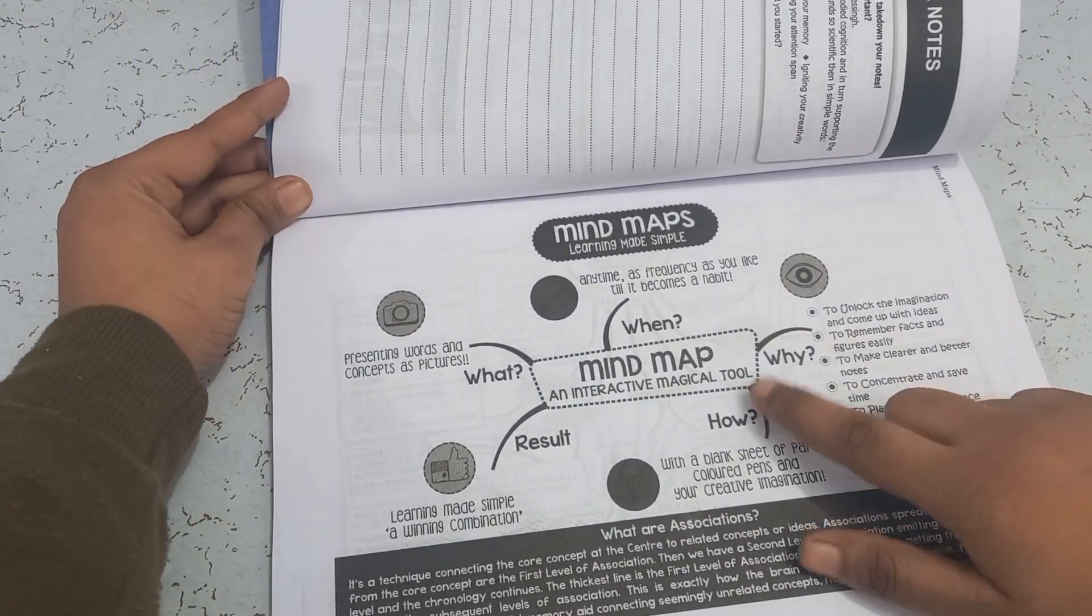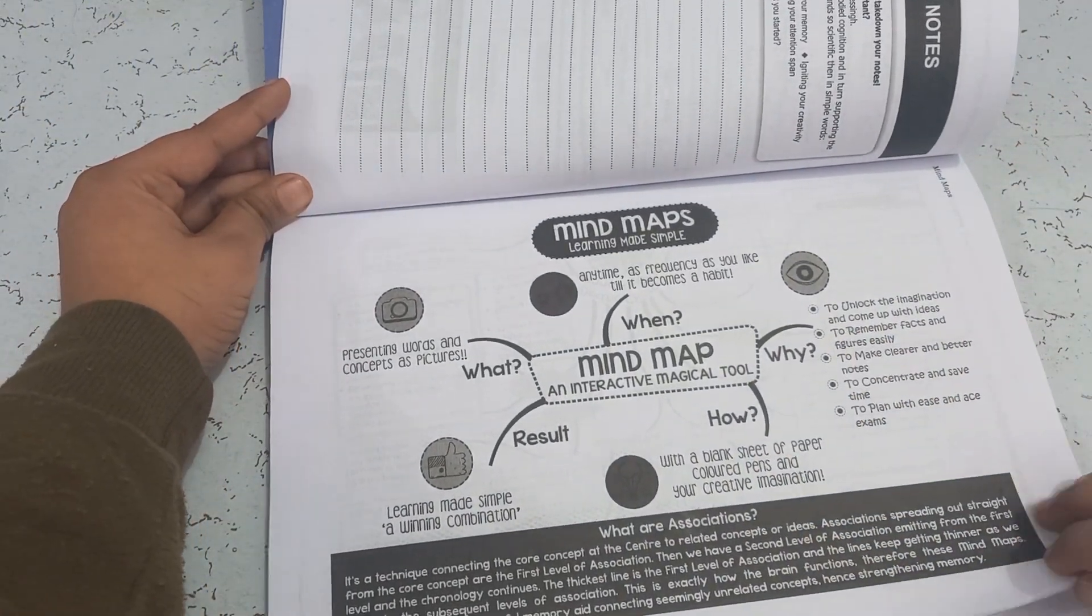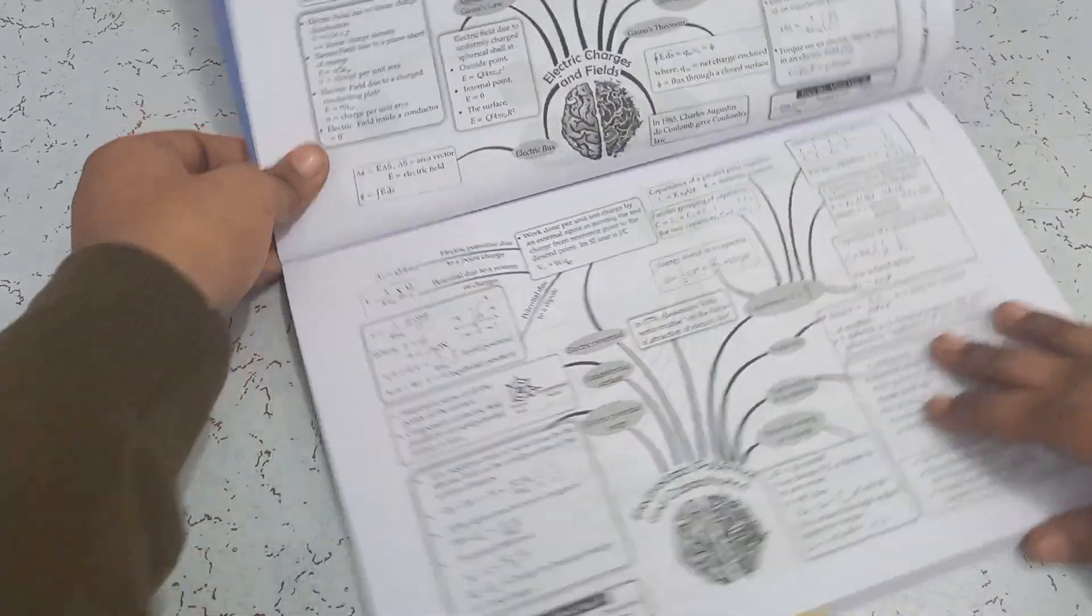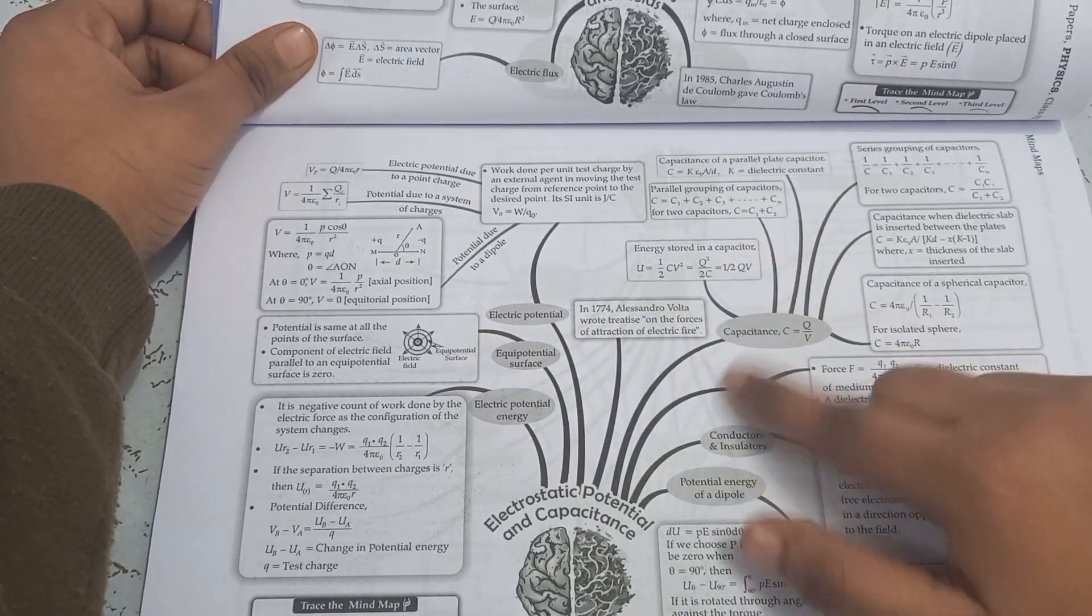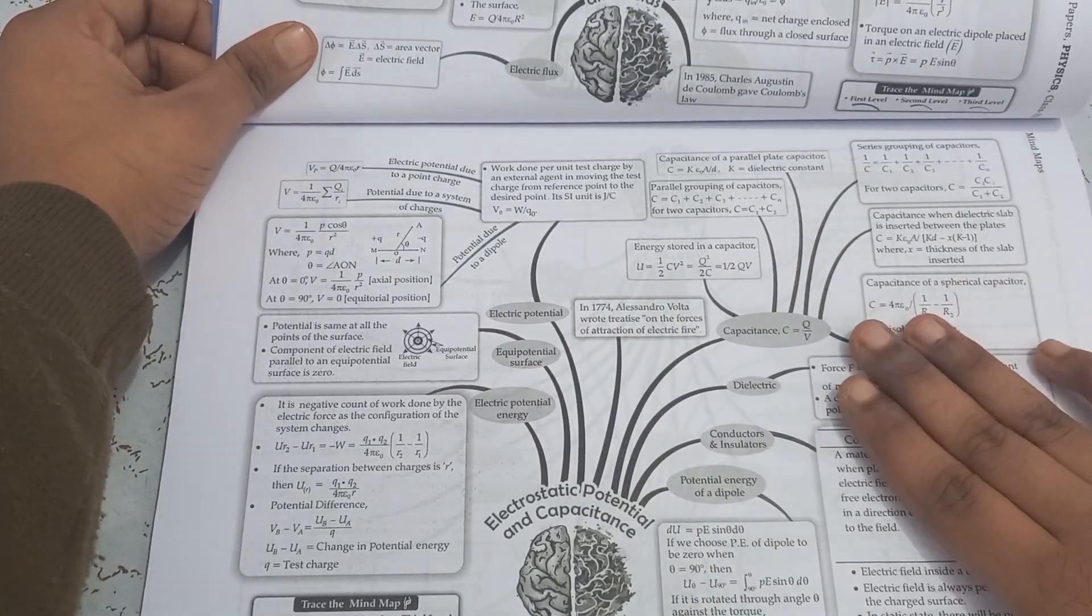Now, as I said, all in one book which contains mind maps as well. So here's the mind maps in continuation for every chapter, provided in only one page but contains all the information, all the formulas.